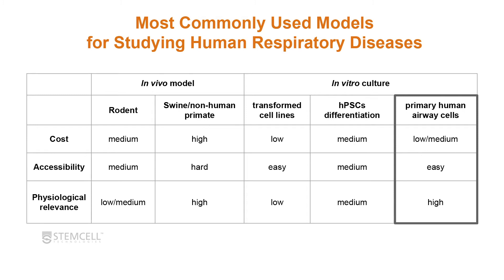We want to reduce in vivo modeling by using in vitro culture systems. Transformed cell lines have relatively low cost and easy accessibility, but physiological relevance is low. Primary human airway epithelial cells are well-established, with low to medium cost, good accessibility, and high physiological relevance. Between these, airway cells derived from HPSCs require much higher labor and, depending on the differentiation protocol, represent more of an early model compared to the mature model offered by primary human airway epithelial cells.